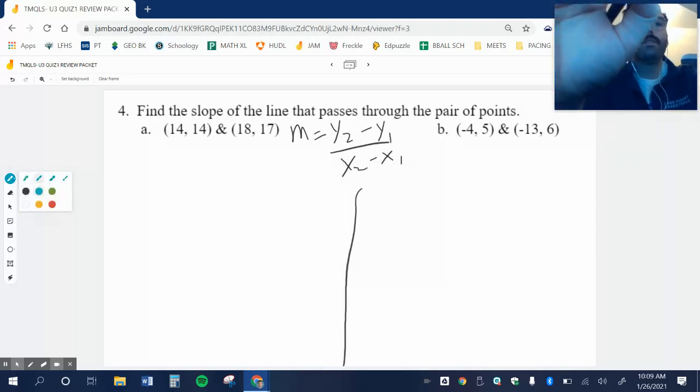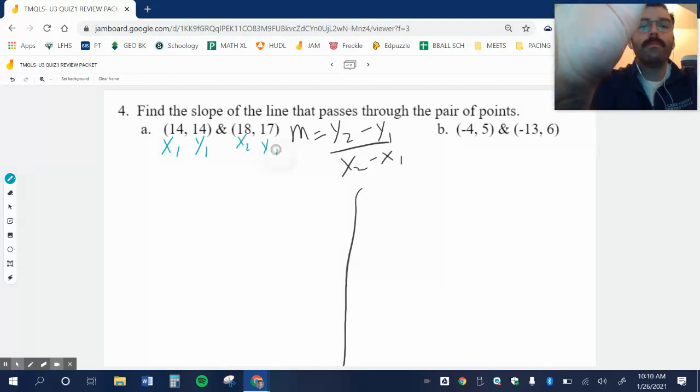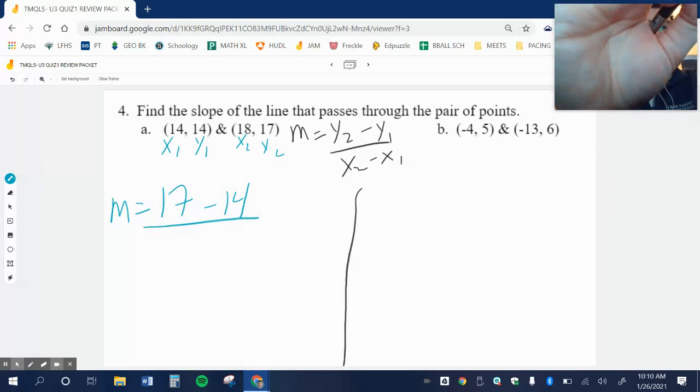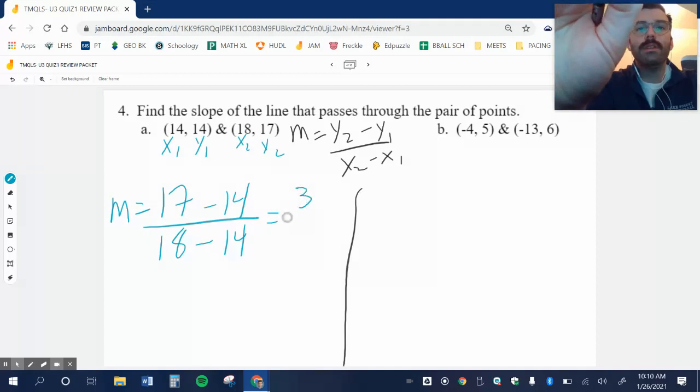The first thing I would do, or the thing that helps me the most, is labeling my points. Then I just throw what I know. Y2, 17, Y1, 14. X2, 18, X1, also 14. 17 minus 14 is 3, 18 minus 14 is 4. Boom.